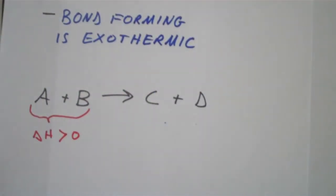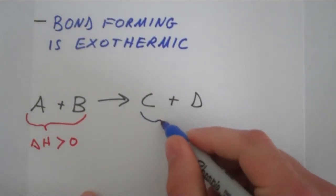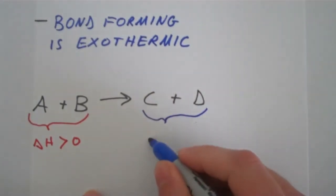At the same time, you have bonds of the products C and D forming. That is going to be a negative delta H.